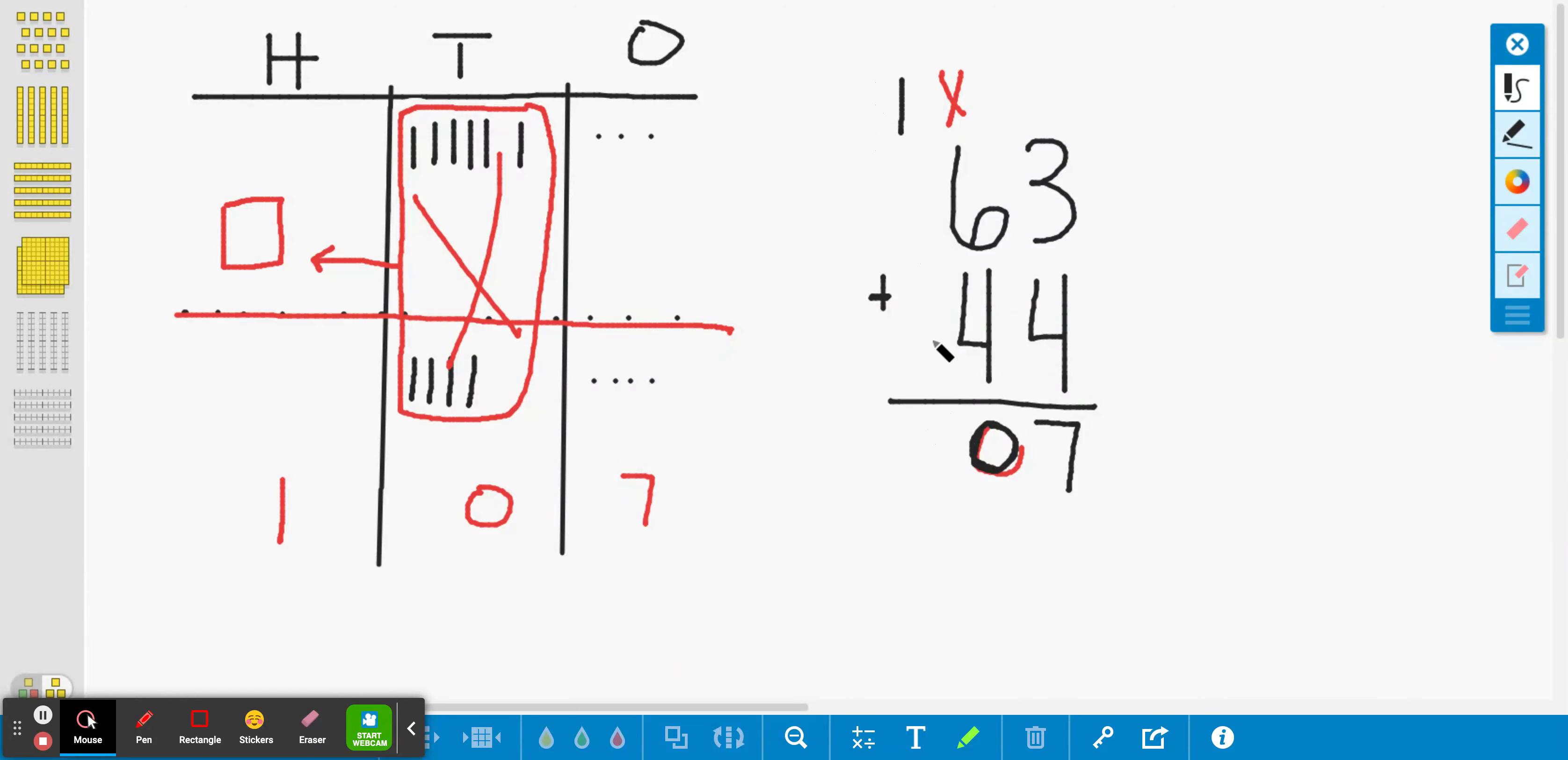I'm in the hundreds place and I have a hundred plus no hundreds on 63 plus no hundreds on 44. That makes, and I can even, if I want to, I can put a little zero in here because 63 doesn't have any hundreds and 44 doesn't have any hundreds. But my new 100 up here, one plus zero plus zero is just simply one.